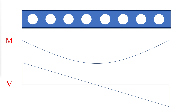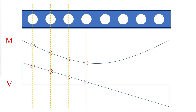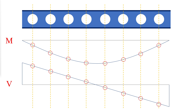The global bending moment and shear forces change along the length of the beam. Consequently, it is necessary to examine the interaction of global shear and moment at each web opening along the entire length of the beam. By examining the interaction of the global moment and shear at each opening, a critical opening can be identified.